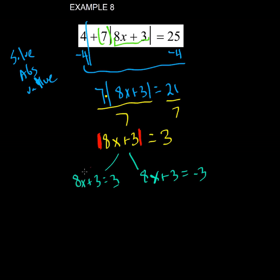Now we solve the first one for x. Minus 3 from both sides, we get 8x equals 0. Divide by 8, and x equals 0.